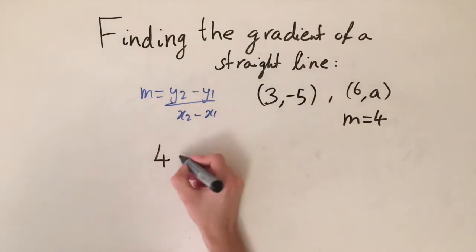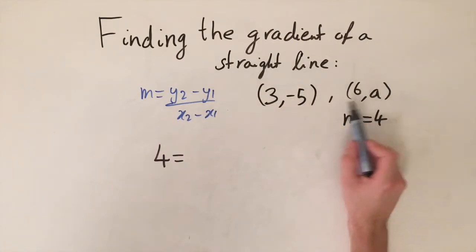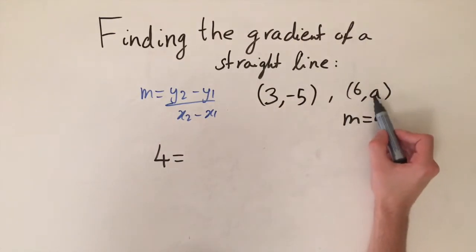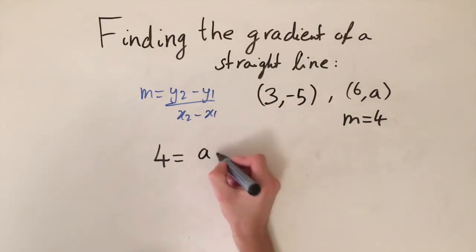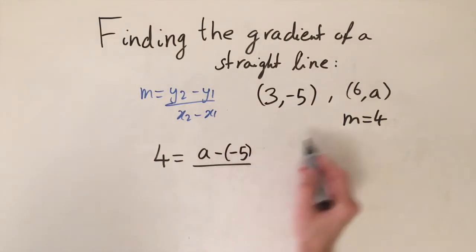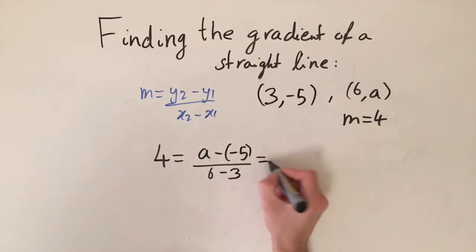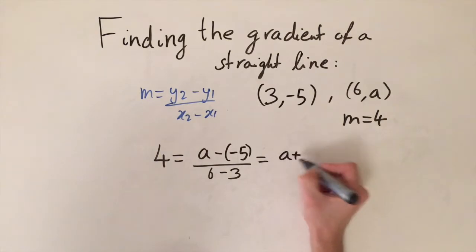So if we do this we have 4 from the gradient, this is equal to the change in y divided by the change in x. Now the change in y is going to be a minus the second y coordinate, so minus minus 5, and then divided by change in x which is 6 minus 3. And then we can simplify this as a plus 5 divided by 3.